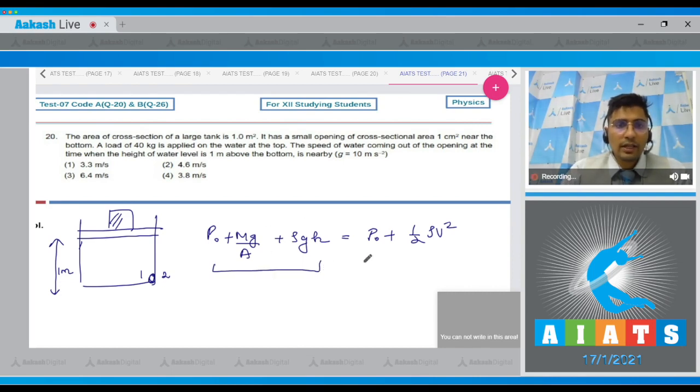This is the pressure at 1 and this is the pressure and the kinetic energy per unit volume at 2.